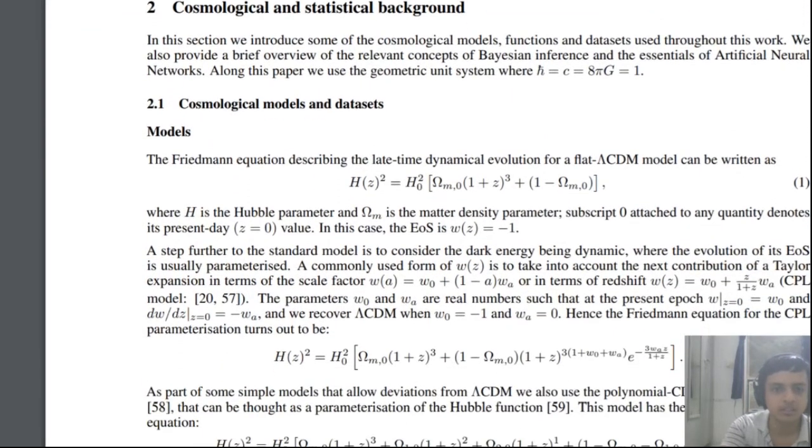This is the Friedman equation including the Hubble's constant in the flat Lambda CDM formalism. All the constants, physical constants, are taken to be one so that the equation is still a bit smaller.